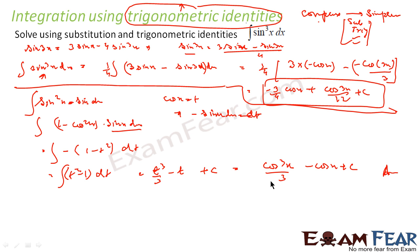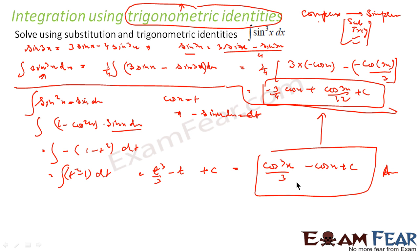Now you must be wondering you get different answers. But actually if you simplify this — one answer has cos cube and the other has cos 3x — if you just break the cos cube using the formula, you will find both are exactly the same.